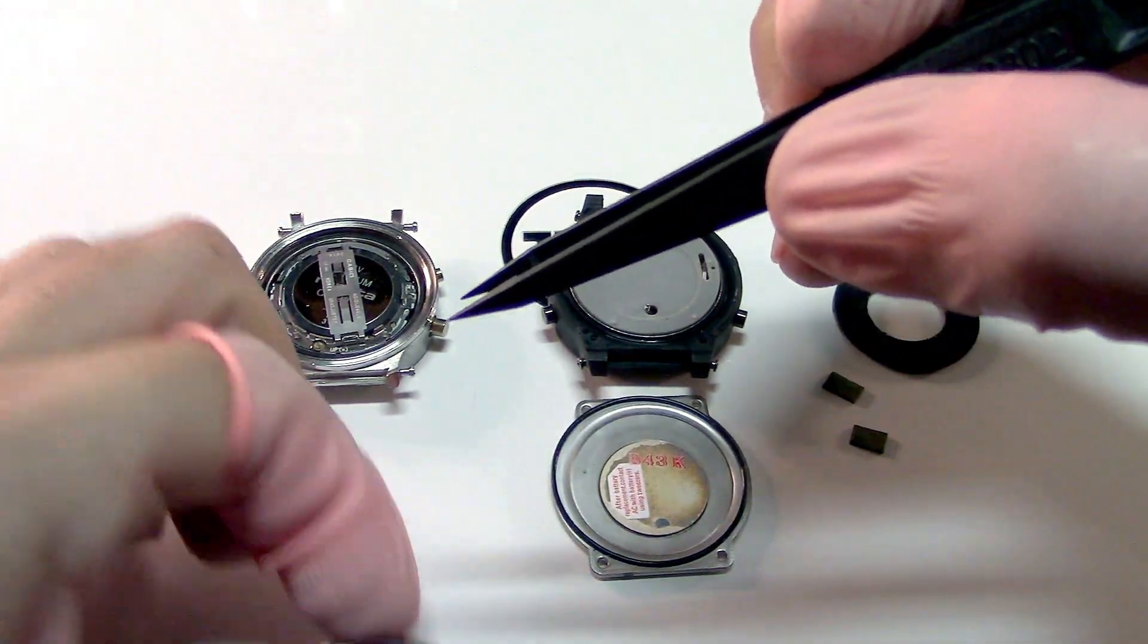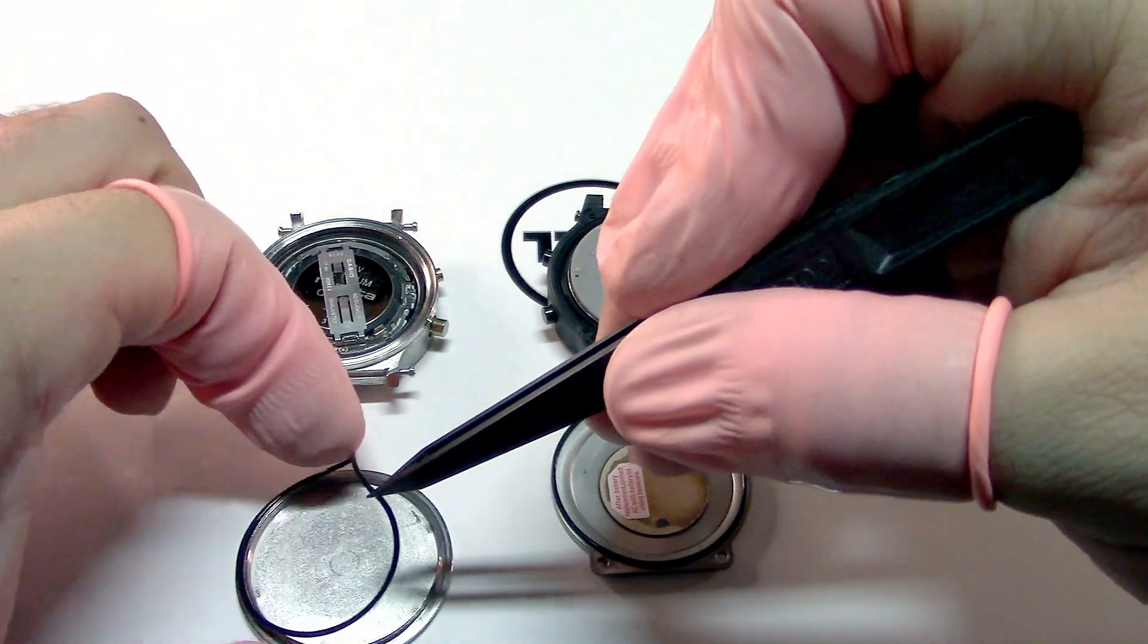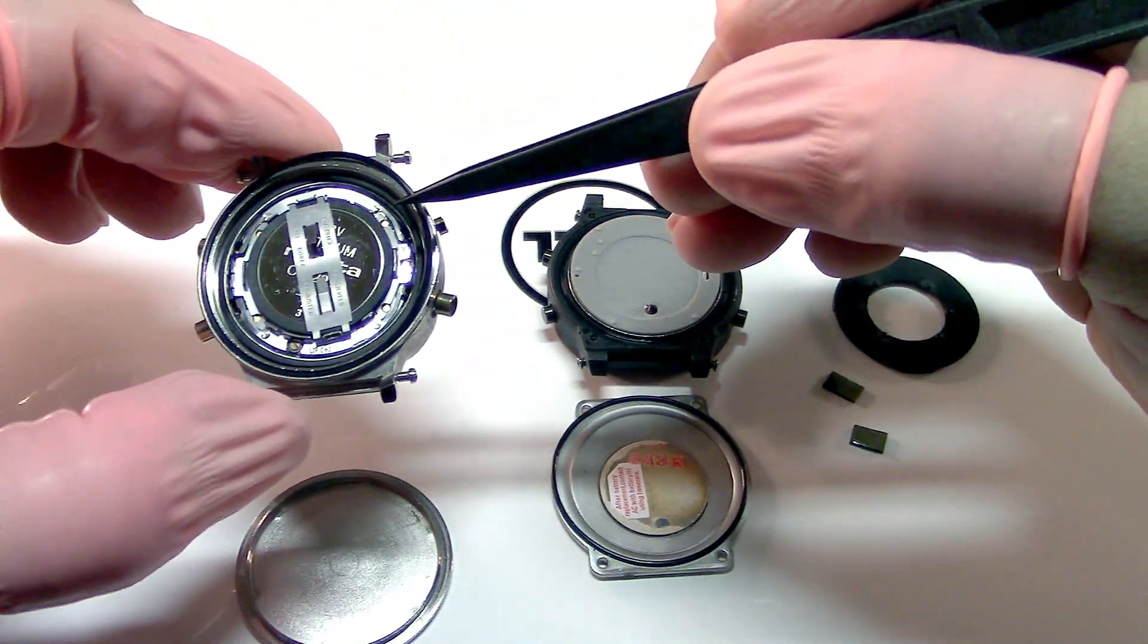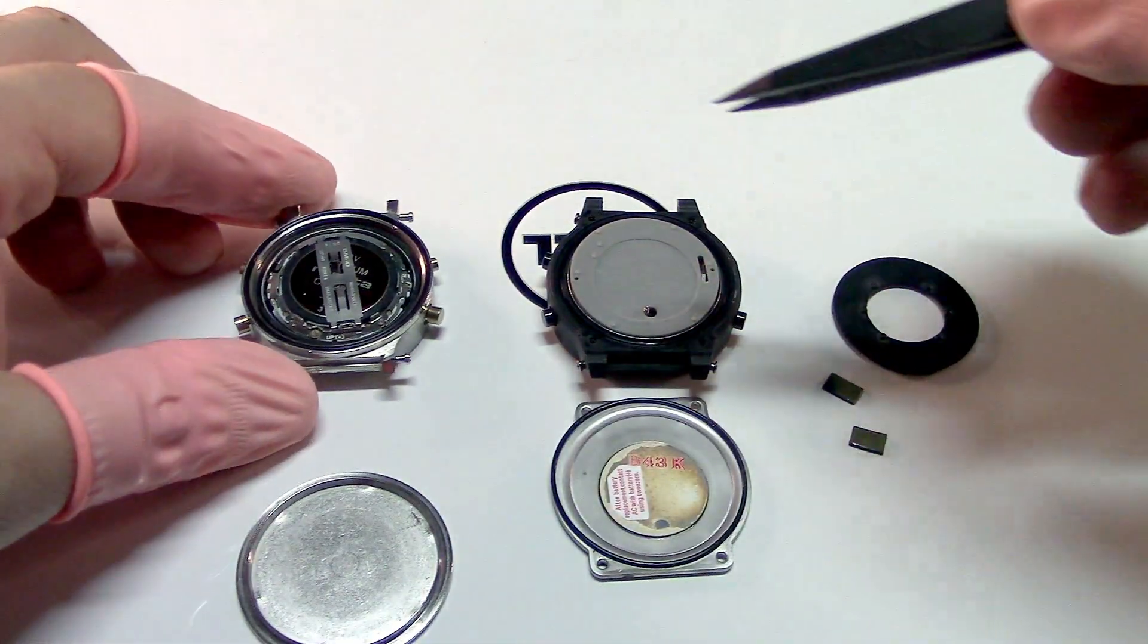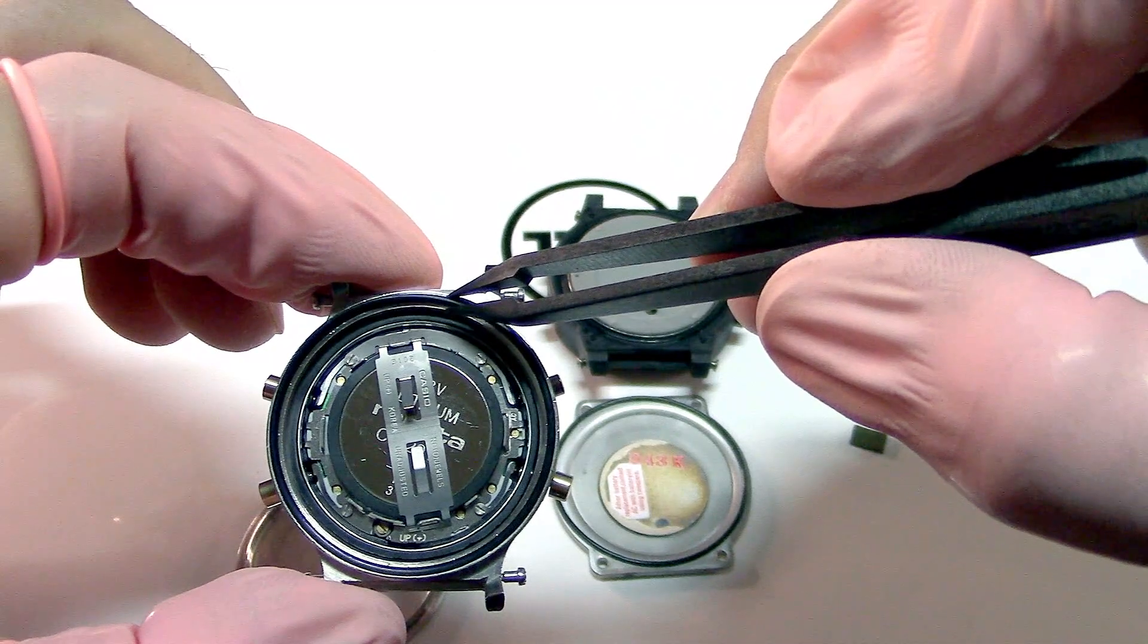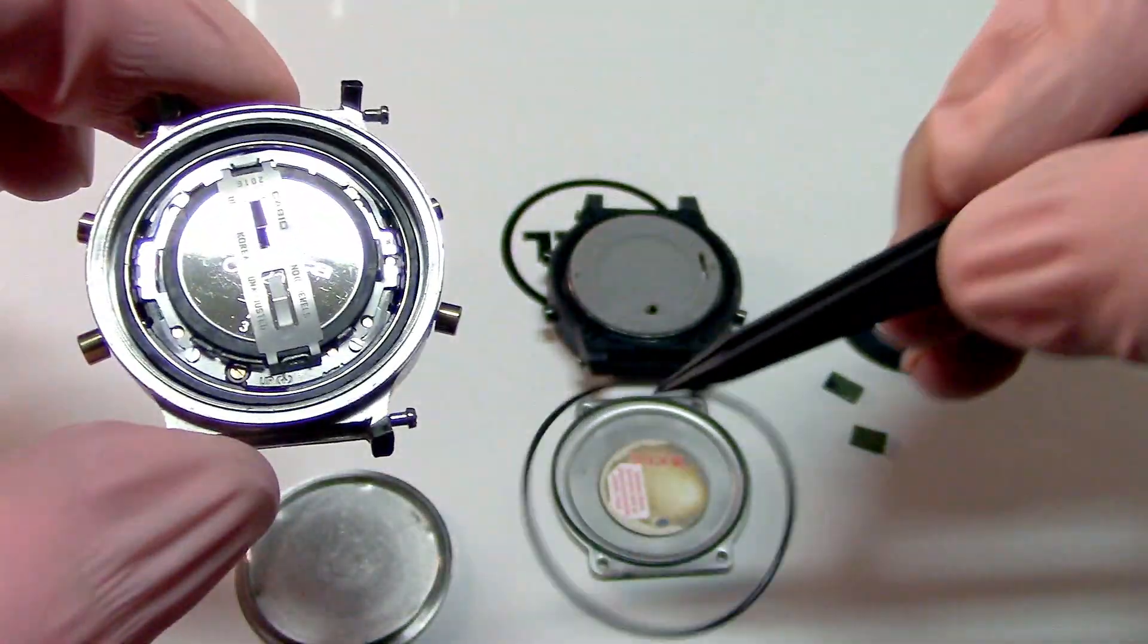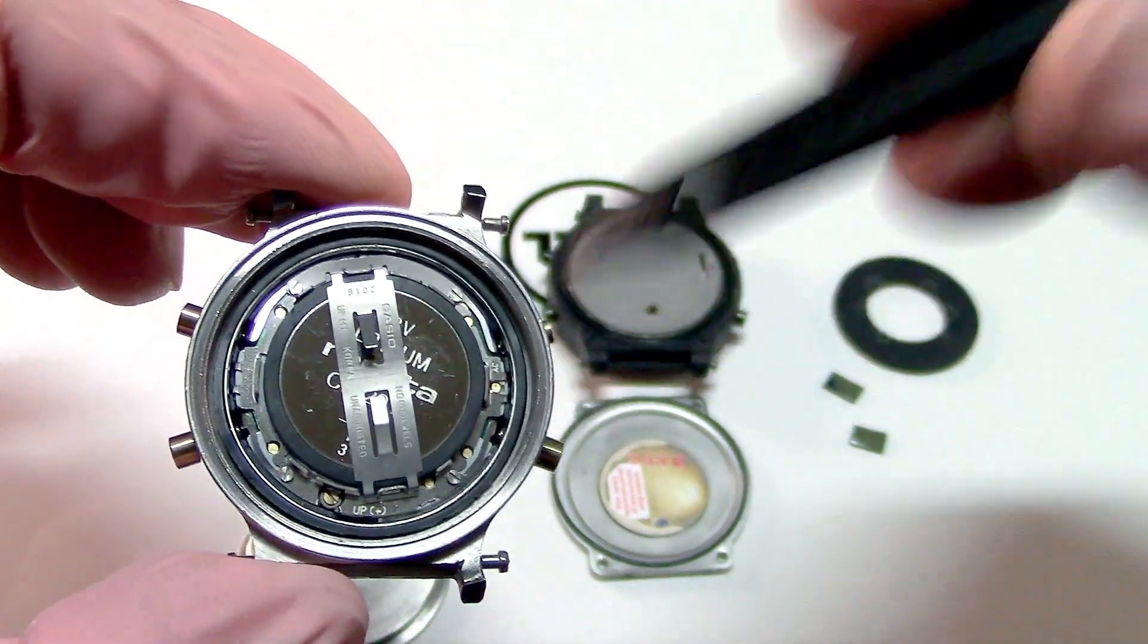This is the case back. Usually when you pull off the case back, the O-ring, the gasket comes with the case back, but to mount it back, you have to put the case back back on the case. As you can see, there is a little recess here where the gasket goes. It goes right here.